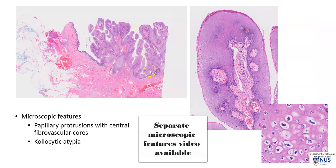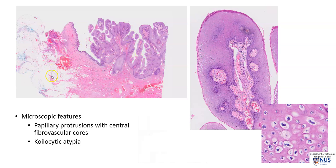Microscopically — and there will be a separate, more detailed video describing the microscopic features — we see papillary protrusions. This example is from the skin, but the lesional tissue shows similar features to what we would see in a penile condyloma. These papillary protrusions have central fibrovascular cores. You can see some blood vessels and fibrous tissue within the core. And if you look carefully, especially close to the surface epithelium,